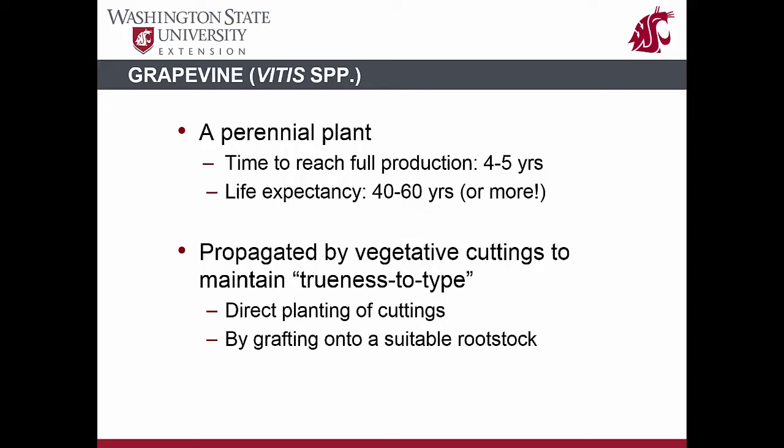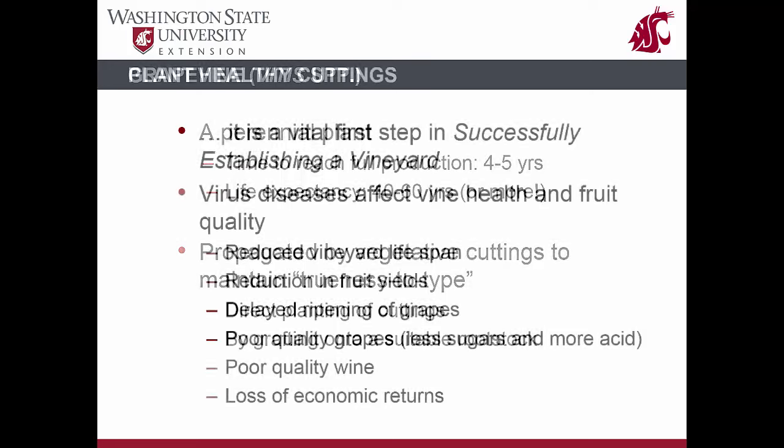In general, cultivars of Vitis vinifera are used for producing wine grapes. Vineyards are planted directly with cuttings of a particular cultivar or specific clone, or with grafted vines consisting of a scion. A significant majority of vineyards in Washington State are planted directly with cuttings rather than grafted vines.